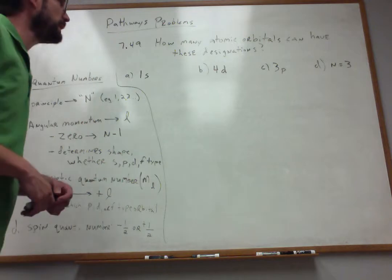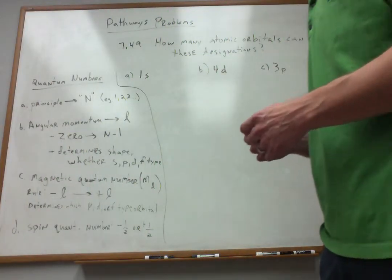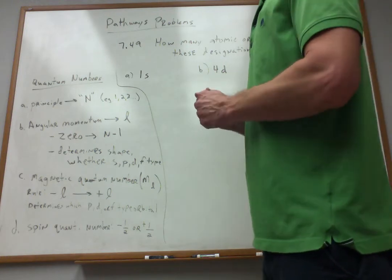And that basically limits two electrons per orbital. But nonetheless, let's get back to the problem. How many atomic orbitals can have these designations possible? So let's first talk about the 1s.